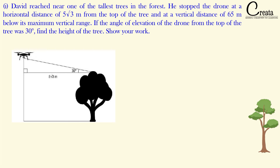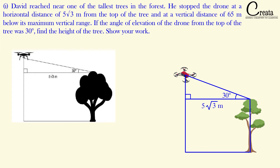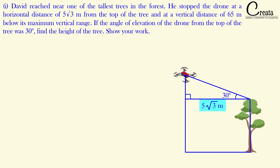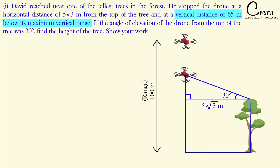Let's take down the first part. A tree is given and the drone has stopped at one location. The horizontal distance between the drone and the top of the tree is given as 5√3 meters. The angle of elevation from the top of the tree to the drone is 30 degrees. David stopped the drone at a vertical distance of 65 meters below its maximum vertical range of 100 meters, so the drone's height is 100 minus 65 = 35 meters.